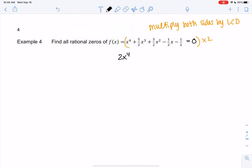And that works because it'll still be 0 on the right side, so we're still solving for zeros. So we get 2x^4 + 5x^3 + 3x^2 - x - 1 = 0. And this function will have the same zeros. And now we don't have to deal with fractions.